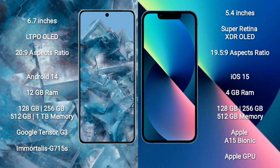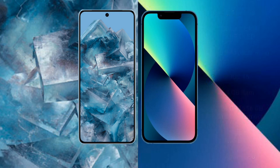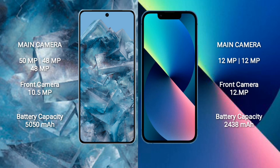Google Pixel 8 Pro comes with 12GB RAM and 128GB, 256GB, 512GB, or 1TB internal storage, with a Google Tensor G3 processor and GPU G715A. iPhone 13 mini comes with 4GB RAM and 128GB, 256GB, or 512GB internal storage, with an Apple A15 Bionic processor and Apple GPU.